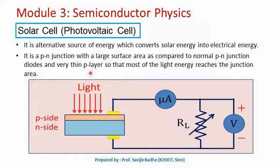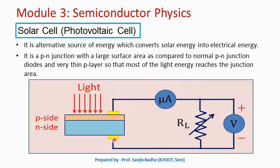Why is the p-type semiconductor layer very thin? Because with a thin p-layer, most of the light energy can reach the junction area. The light energy can then be utilized in exciting electrons from the valence band to the conduction band on the p-side, as well as on the n-side near the junction, giving rise to more current and therefore more voltage developed across the solar cell.